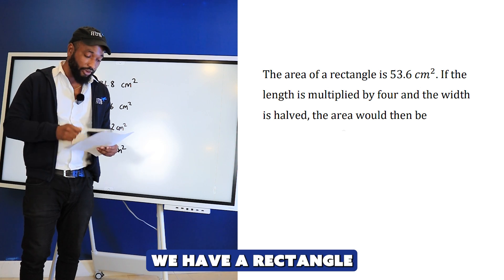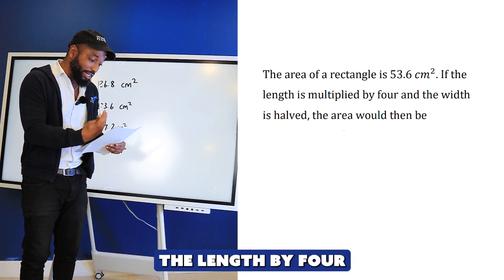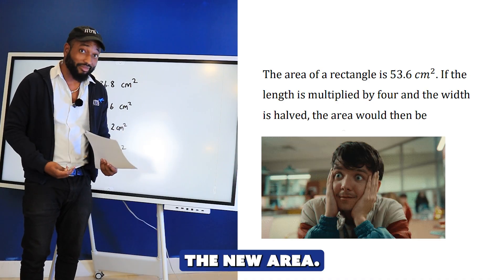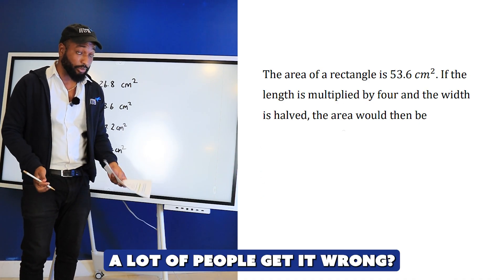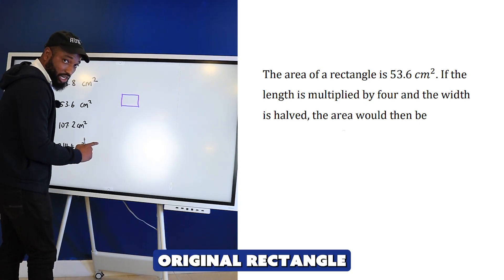So this is the question: The area of a rectangle is 53.6 cm². If the length is multiplied by four and the width is halved, what would be the new area? Do you know the answer? A lot of people get it wrong. Let's check it out.